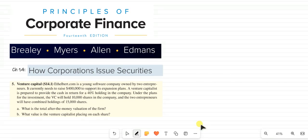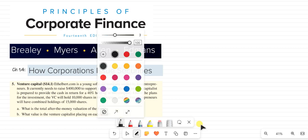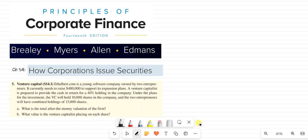This is question number five from the exercise of Chapter 14. Let's read this question first. Apper.com is a young software company owned by two entrepreneurs. It currently needs to raise $400,000 to support its expansion plan.